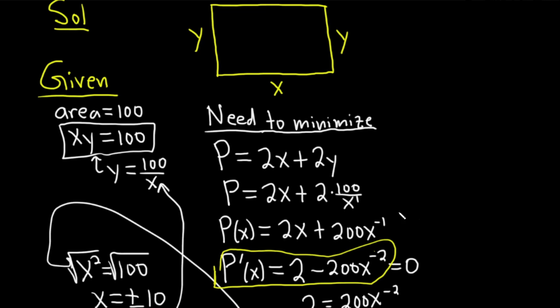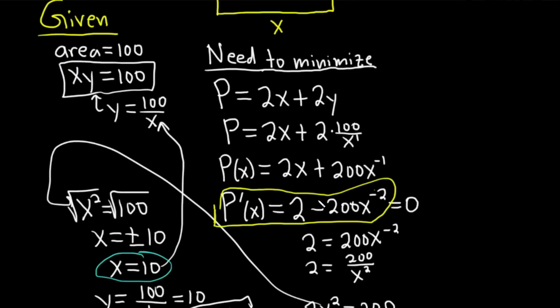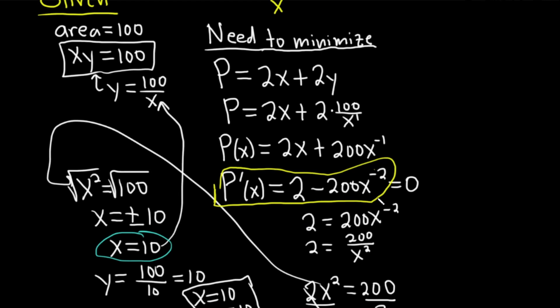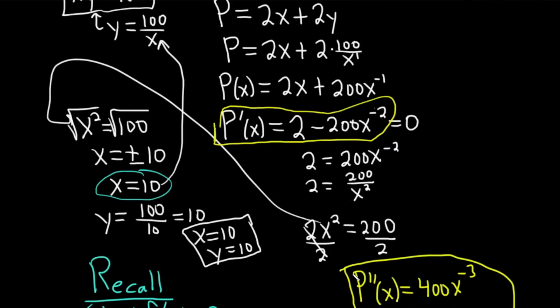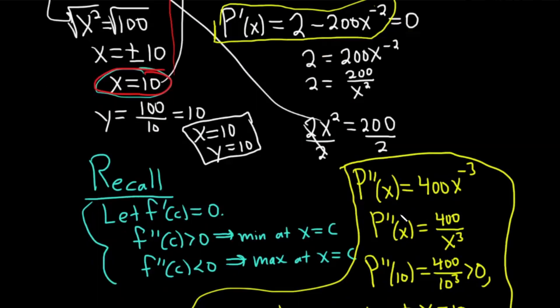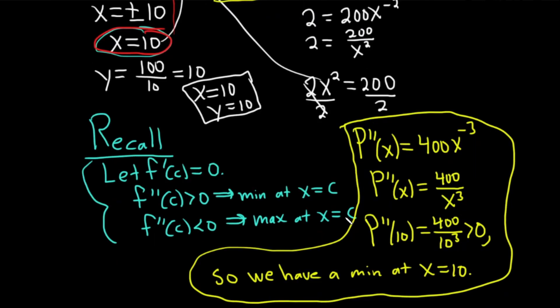And we have a pure function of x. And now we apply the second derivative test, which basically says, take the derivative, set it equal to 0, do some algebra, and we ended up with x equals 10. We took the 10, plugged it into the formula for y, and we found y equals 10. But we never actually verified that 10 gave a minimum, so that's where the second derivative test comes in.